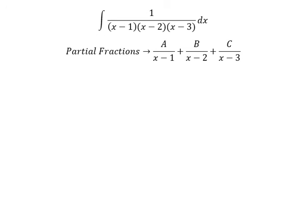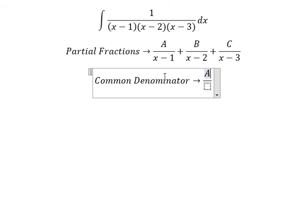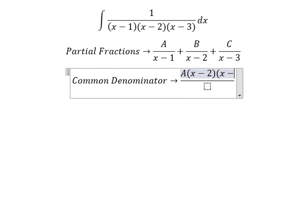Now we do common denominator. So for capital A, they are missing x minus two and x minus three. So they need to multiply by x minus two times x minus three.